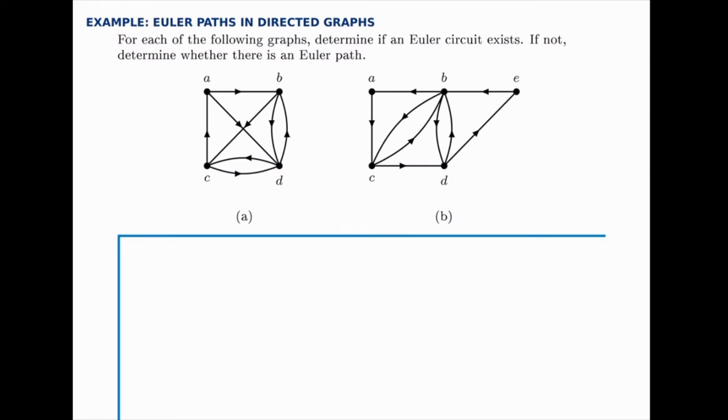If not, we're going to look and see if one of them has one more outlet than it does inlet, and one more of them has one more inlet than it does outlet, but all the others are consistent. If so, there's an Euler path. All right, so let's start with the first one, with part A.